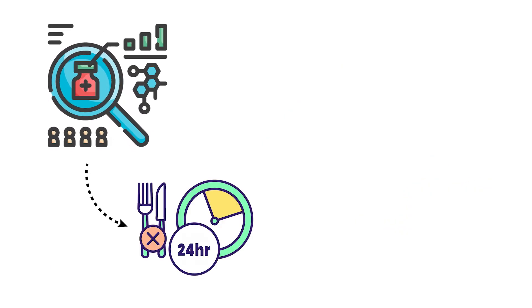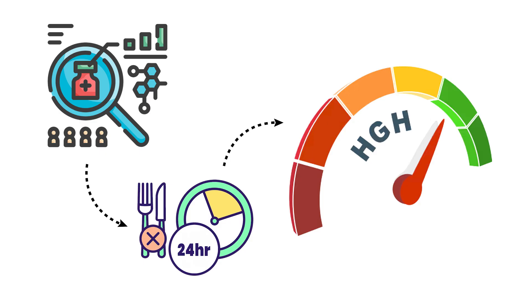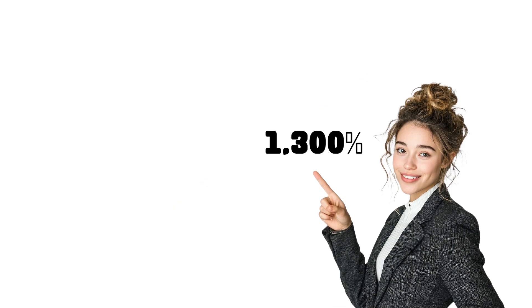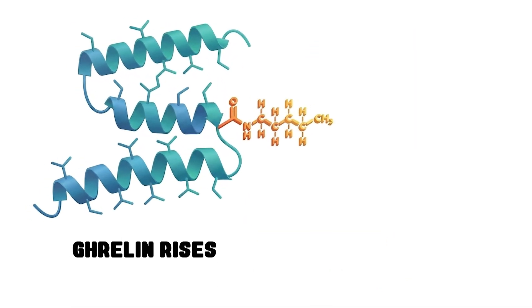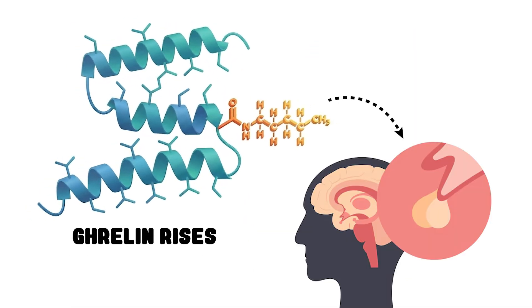Research shows that a 24-hour fast can raise HGH levels by an average of 1,300% in women and nearly 2,000% in men. Two things cause this: insulin drops, which takes the brake off HGH release, and ghrelin rises, which tells the pituitary gland to pump out more.